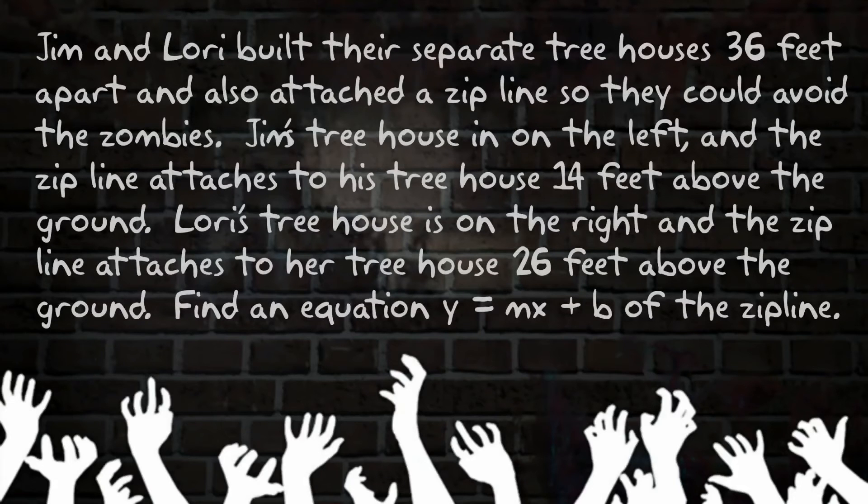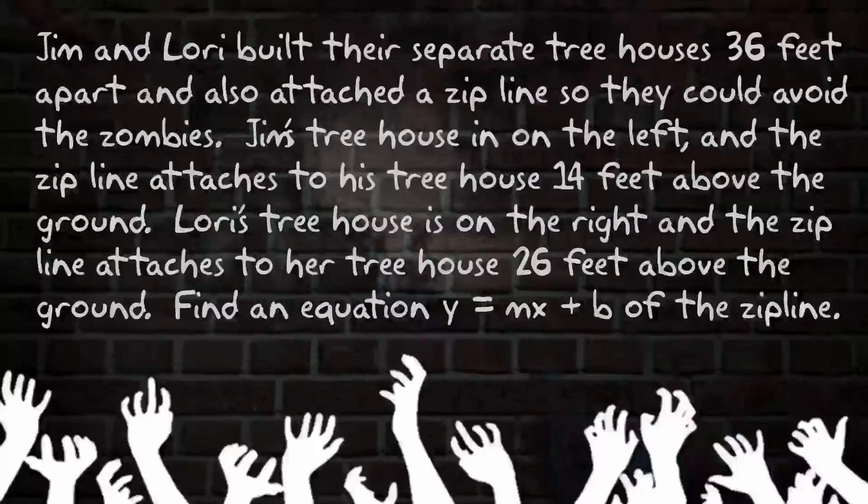Jim and Lori built their separate tree houses 36 feet apart and also attached a zip line so that they can avoid the zombies. Jim's tree house is on the left, and the zip line attaches to his tree house 14 feet above the ground.